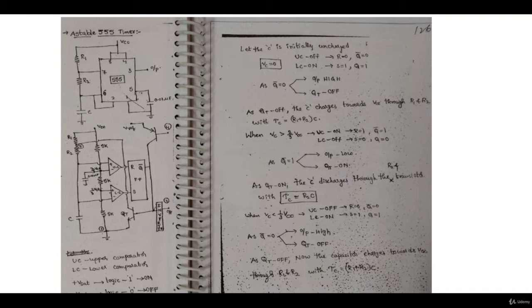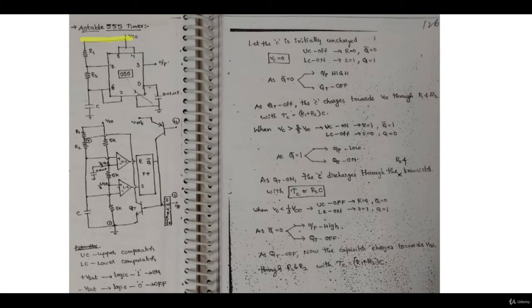Now let's look at an astable multivibrator and how you can make it using a 555 timer IC. Here you can see the circuit - it is quite similar to what we had in monostable, but now we have a resistor between terminals 6 and 7, and our trigger signal is connected to the capacitor voltage, so triggering will be controlled by the voltage stored in the capacitor. The rest of the circuit is similar to what we had before.